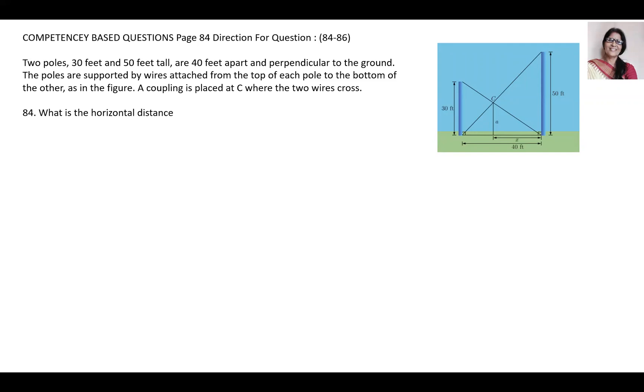Question number one: what is the horizontal distance from C to the taller pole? Answers are 32 feet, 25 feet, 18 feet, 30 feet. Next question is how high above the ground is the coupling? 12.75 feet, 18.75 feet, 25.25 feet, 30.50 feet.